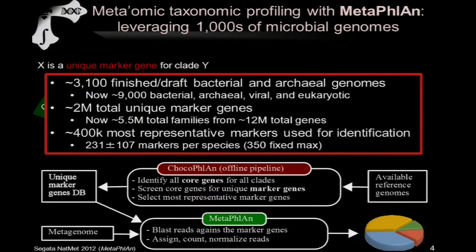Something I can't emphasize enough is that shotgun sequencing approaches such as metagenomics or metatranscriptomics really do give access to all four groups of microbes typically of interest in the microbiome. This brings our available gene pool up to about 5.5 million total families, boiled down from a total of 12 million microbial genes in reference genomes. We also have a pool of 8 million that we're working from in the human microbiome, so there's a tremendous amount of reference and metagenomic data to combine in these new analysis approaches.